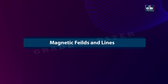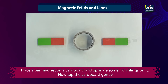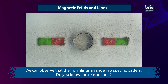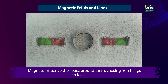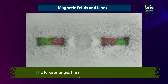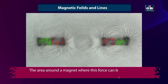Magnetic Fields and Lines. Place a bar magnet on a cardboard and sprinkle some iron filings on it. Now tap the cardboard gently. We can observe that the iron filings arrange in a specific pattern. Magnets influence the space around them, causing iron filings to feel a force. The area around a magnet where this force can be detected is called a magnetic field.